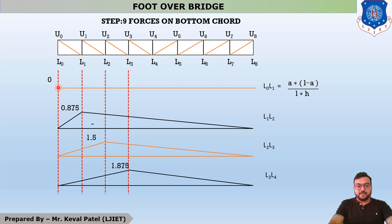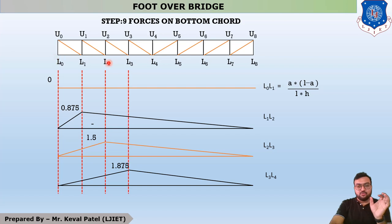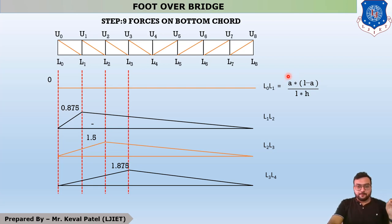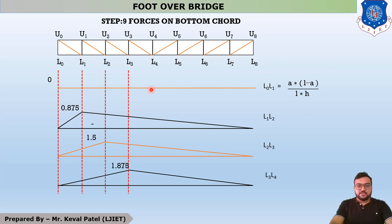In the influence line diagram, for the first member L0L1, the L0 point takes maximum force. We draw one influence line diagram with respect to L0. The influence line diagram equation is A × (L − A) / (L × H). Here A is the distance from the zero-zero level. Since L0 is exactly at the zero-zero point, putting A equal to zero gives an influence line value of zero. So we draw a straight line for member L0L1.